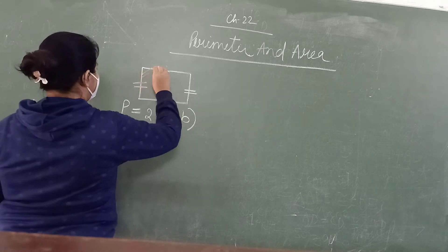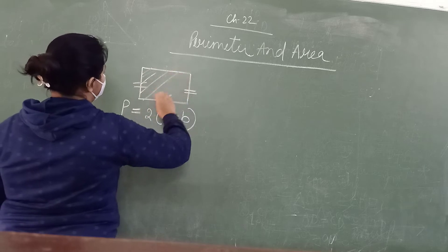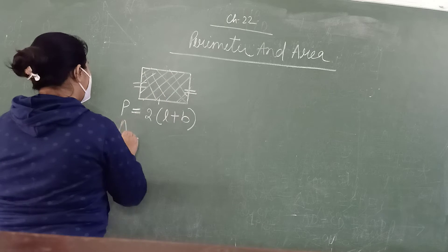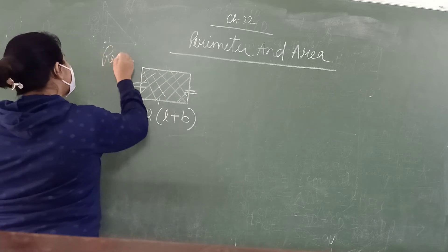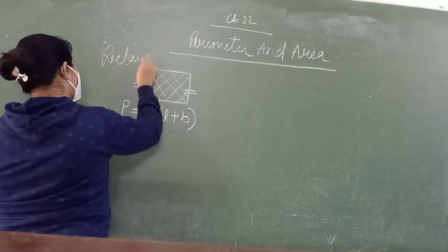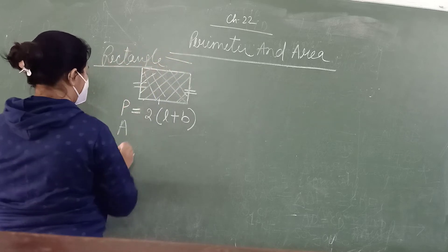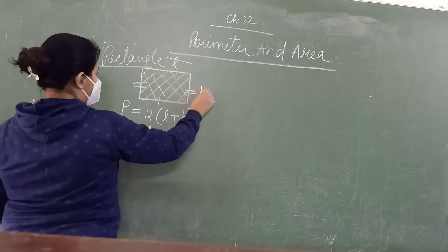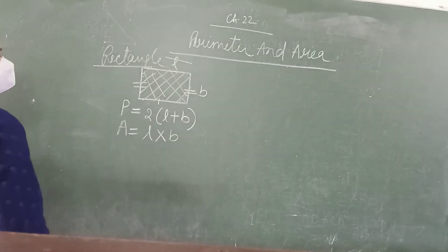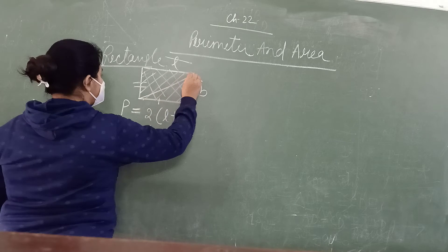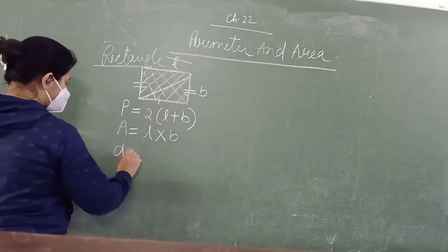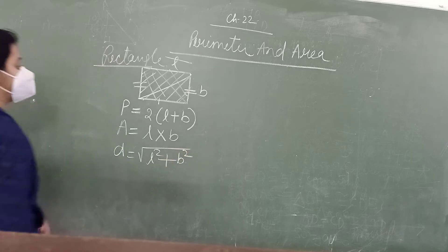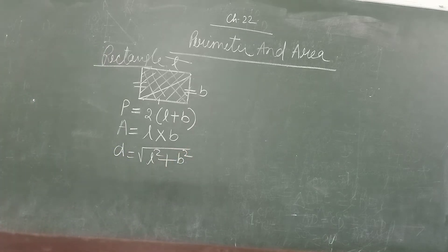Second is area. Area is the total space occupied by the figure. Area of a rectangle is length into width — this is length and this is width — so, length into width. And the diagonal of the rectangle is: square root of (L squared plus B squared). This is the diagonal of the rectangle.